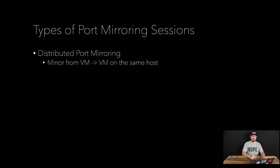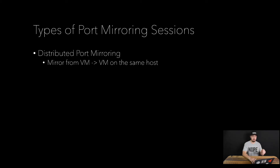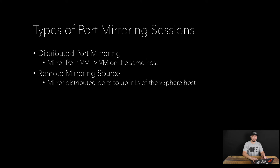The first type of port mirroring session is called distributed port mirroring. This is basically where we're taking packets from one VM and sending them to another VM on the same host. Another type of session is a remote mirroring source, where we're mirroring one of our distributed ports to uplinks of the vSphere host — so we're taking traffic coming out of our VM and sending it onto the physical network through one of our physical uplinks.